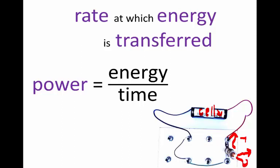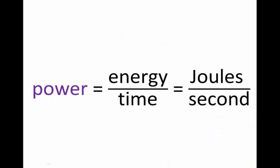The less energy comes out every second, the dimmer that bulb will be. Put another way, the greater the power dissipated in the bulb, the brighter the bulb will be. The less the power dissipated in the bulb, the dimmer that bulb will be.